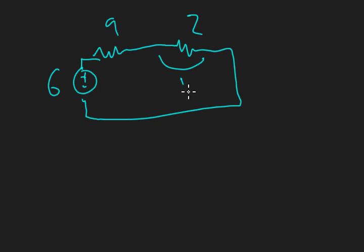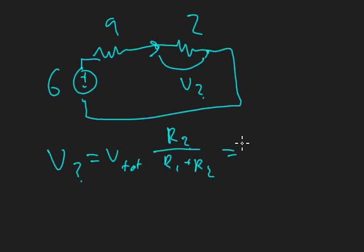We're going to use the formula to calculate this voltage drop. Remember the current is flowing through here, so it's going to be higher here than here. V₂ equals the total times the resistor in question over R₁ plus R₂. The total voltage is 6, the resistor in question is 2, and R₁ plus R₂ is 9 plus 2, which equals 11.